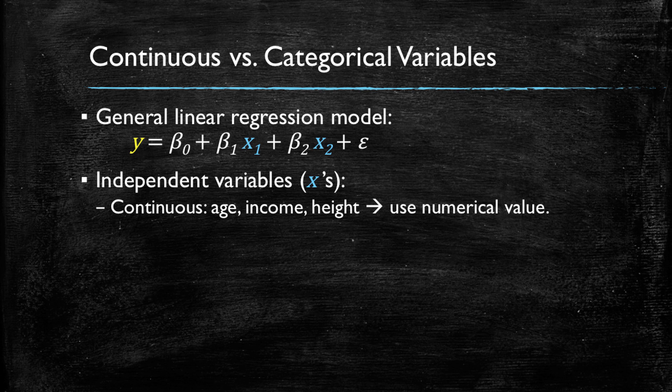Amongst the independent variables we could have continuous ones such as age or the person's income or person height, which is important for clothing. All these have numerical values.